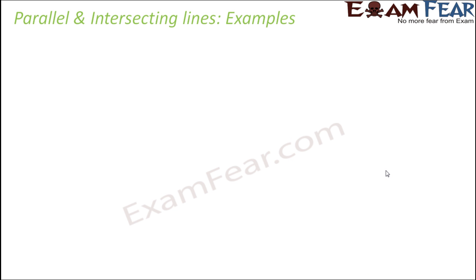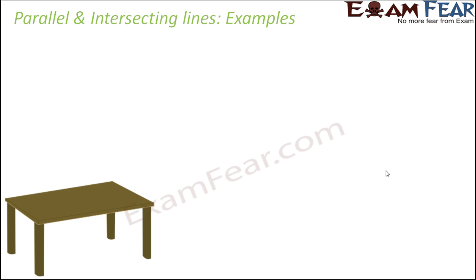Let us now look at some interesting examples of parallel and intersecting lines. Look at this table. When you look at the opposite sides of the table, those two sides are parallel lines because the distance between the two lines remains the same throughout. So the opposite sides of the table are parallel lines.